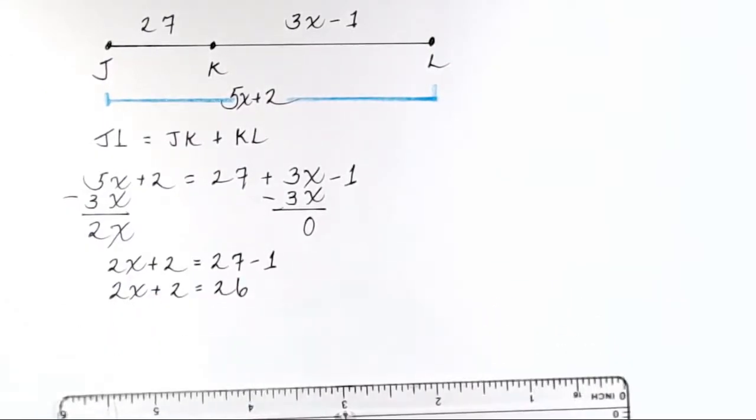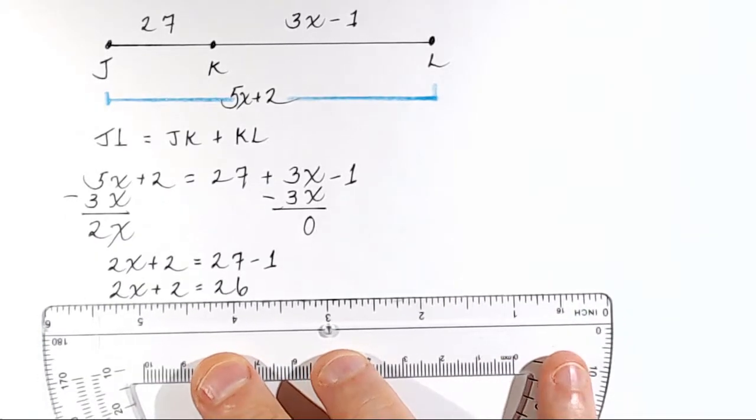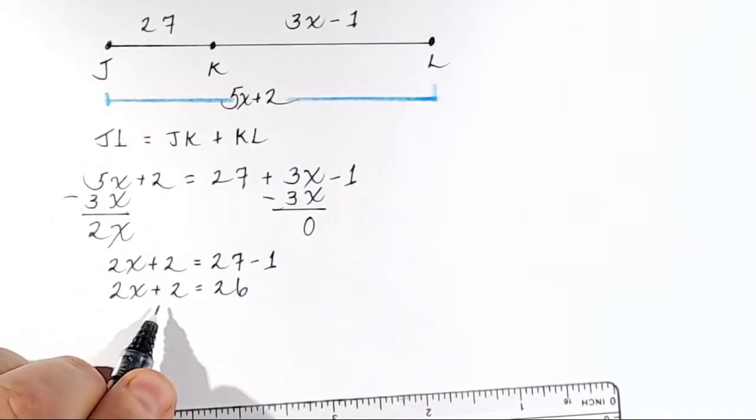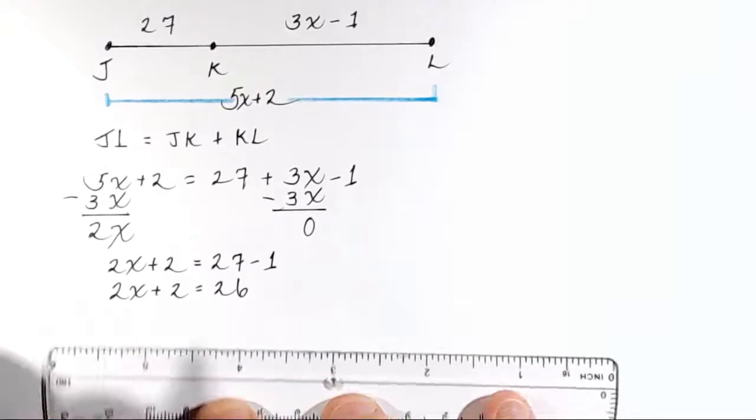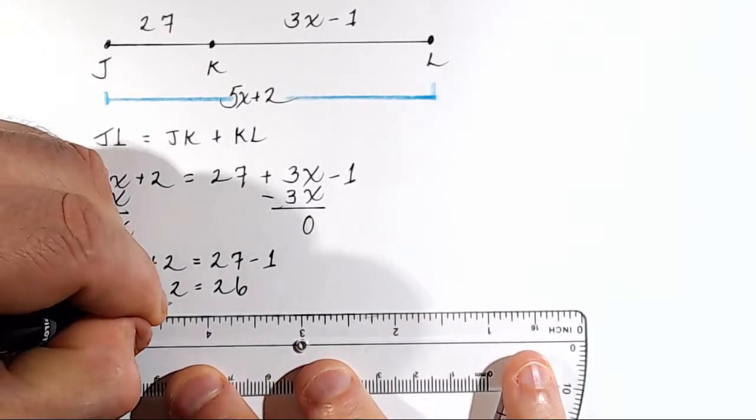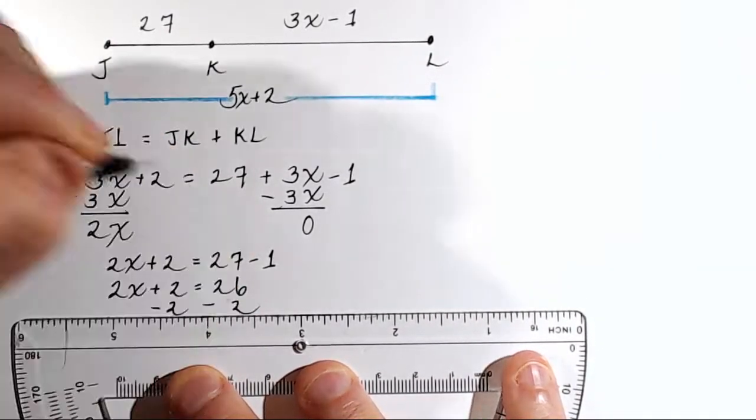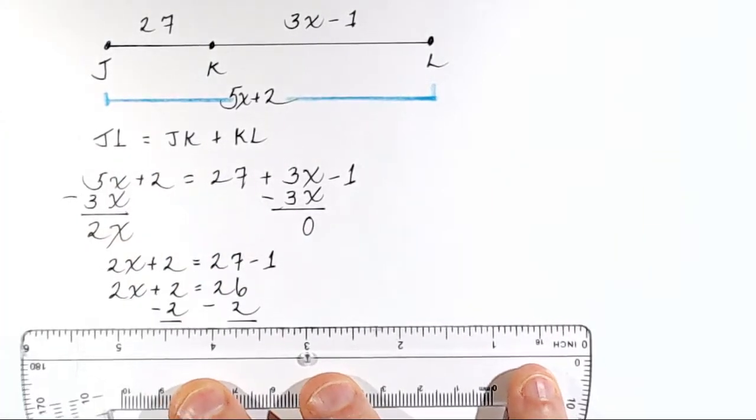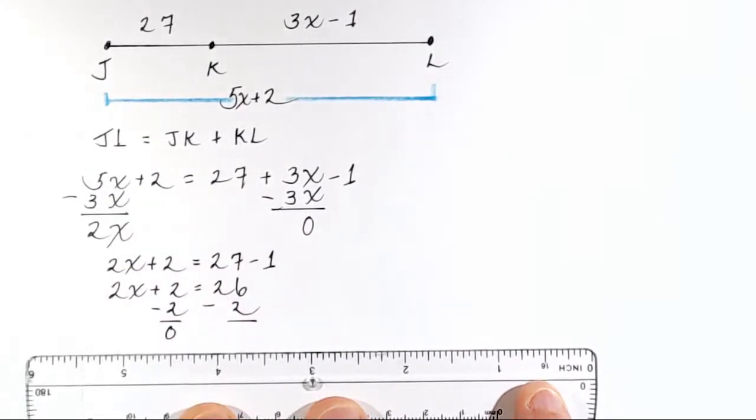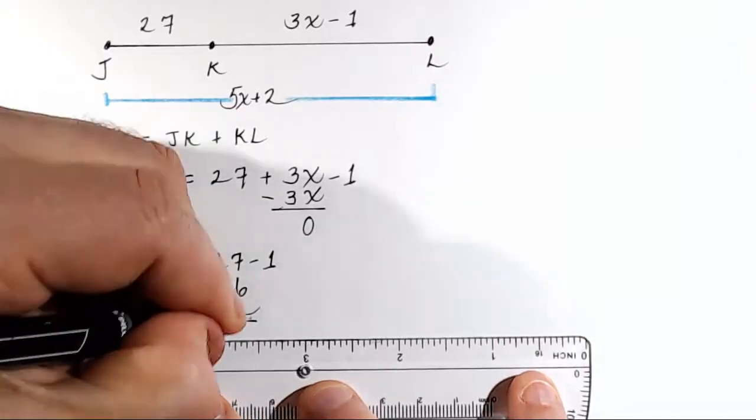Please don't try to stuff a bunch of steps into each step of the problem. Do one thing, then rewrite. Okay? So now what do we do? We want to get X by itself, so we've got to get rid of this plus 2 on the left. We'll subtract 2 from both sides. On the left-hand side, 2 minus 2 is 0. And on the right-hand side, 26 minus 2 is 24.